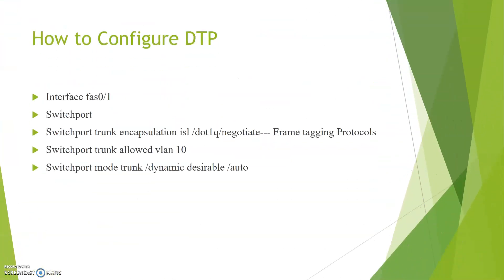How to configure DTP? Go to configuration mode and specify switchport trunk encapsulation — we have to specify the frame tagging protocol, whether ISL or 802.1Q. Then specify switchport trunk allowed VLAN 10, which allows specific VLAN information on the trunk link. Then specify the trunking mode: whether dynamic desirable, auto, or unconditional trunk.